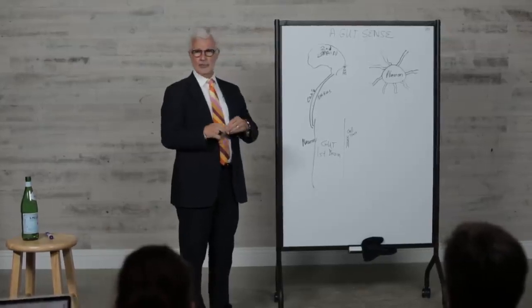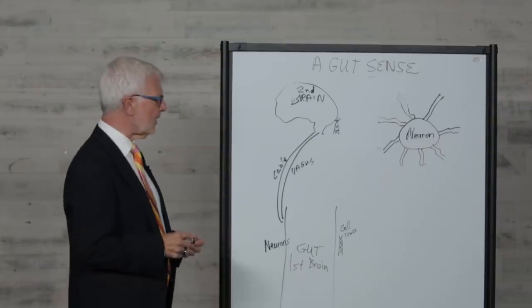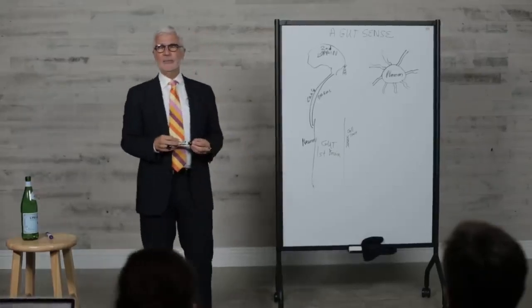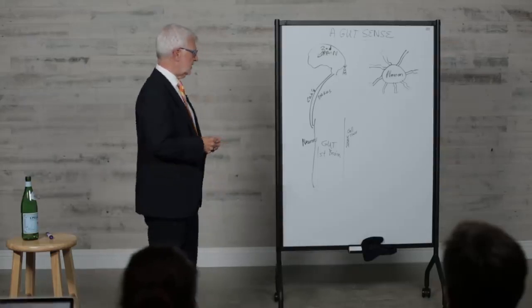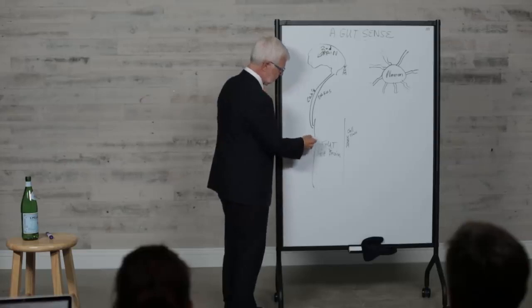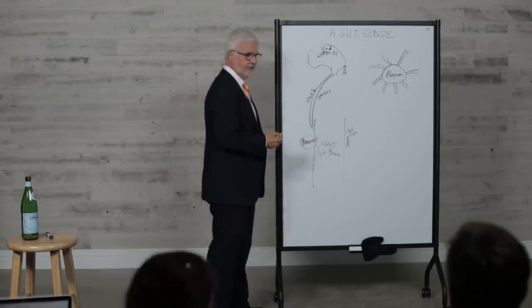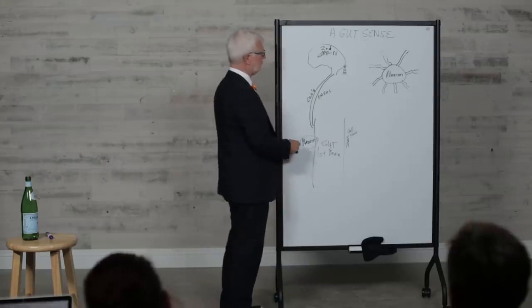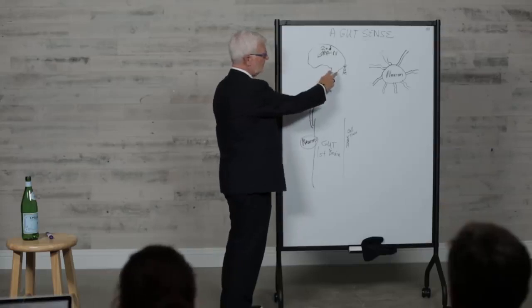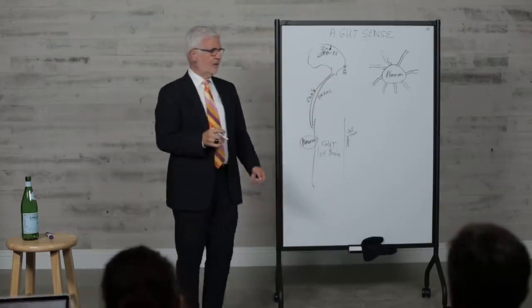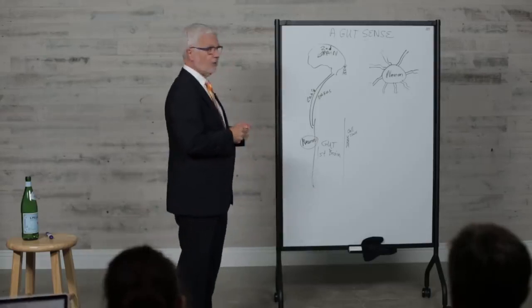Years ago there was a popular book called The Second Brain which detailed the fact that there are more neurons, the cells of the nervous system, lining your gut than there are in the entire spinal cord, which connects the brain to all the rest of you.